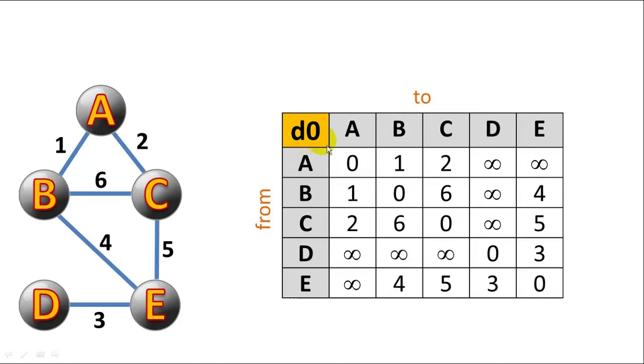And this is D0, which is our starting state, which means that it reflects all the direct connections between vertices.